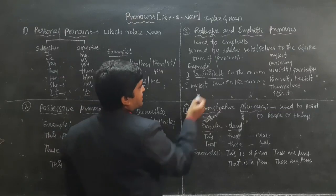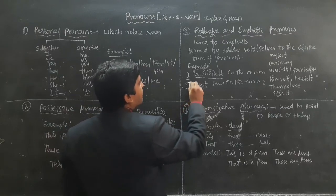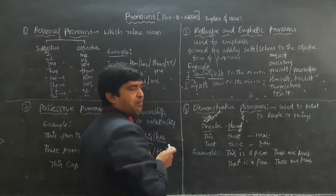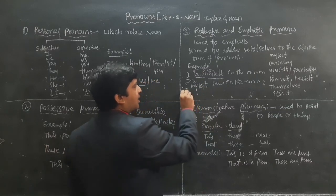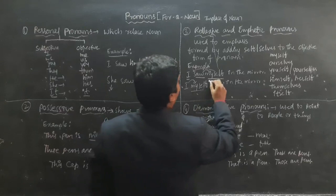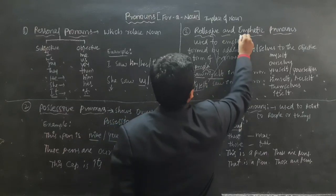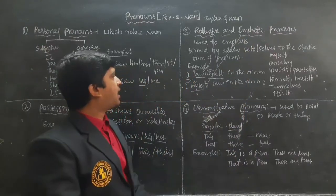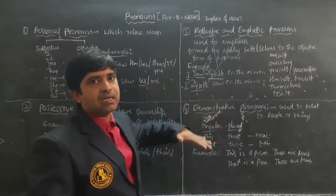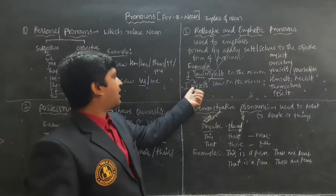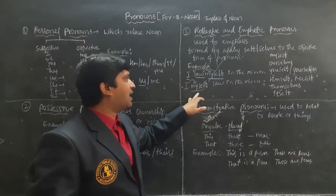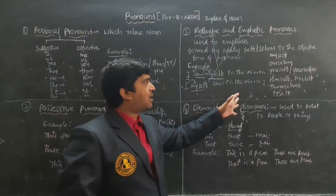In the second sentence, when 'myself' is written immediately after the pronoun, it is called an emphatic pronoun. It is emphasizing — one hundred percent — 'I myself saw in the mirror.'